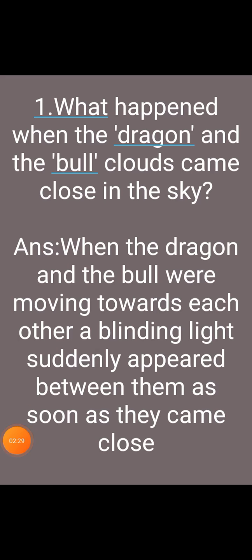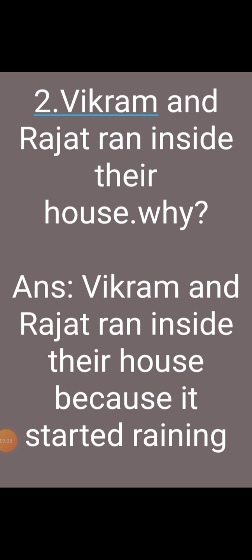Answer the following questions. Now let's see answer the following questions from the lesson 'When the Clouds Fall.' First question: What happened when the dragon and the bull clouds came close in the sky? Answer: When the dragon and the bull were moving towards each other, a blinding light suddenly appeared between them as soon as they came close. Second question: Why did Vikram and Rajat run inside their house? Answer: Vikram and Rajat ran inside their house because it started raining.